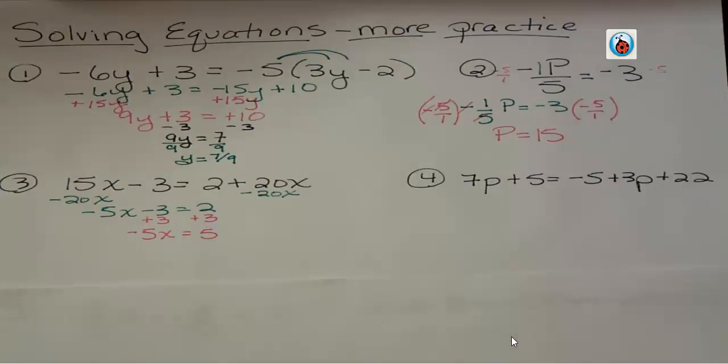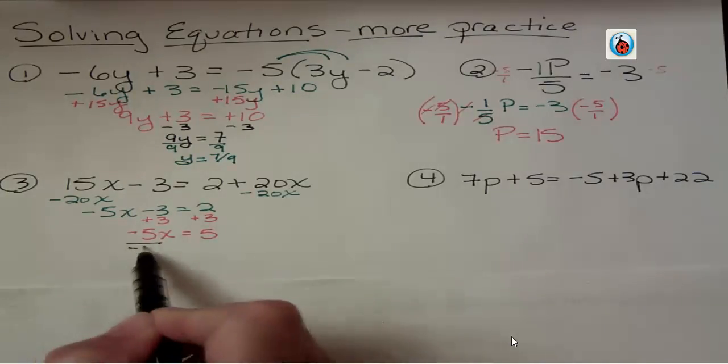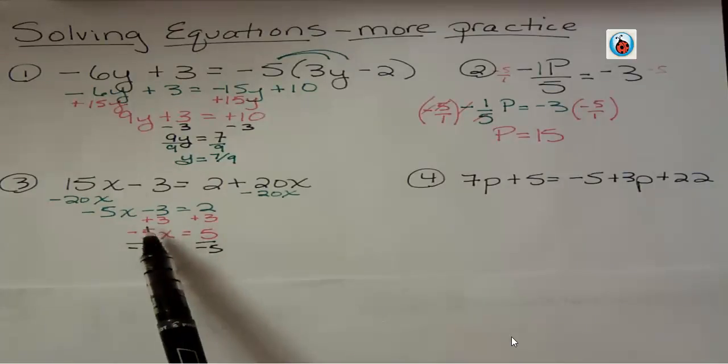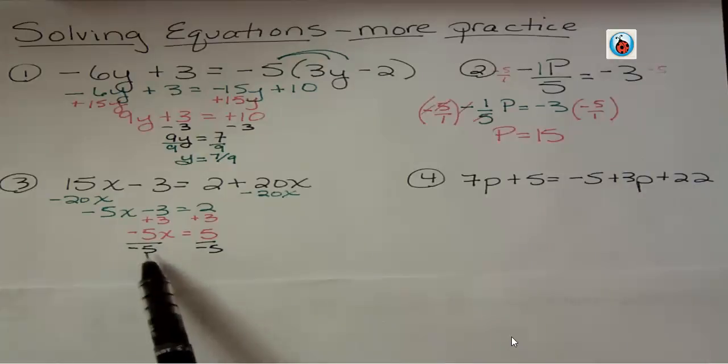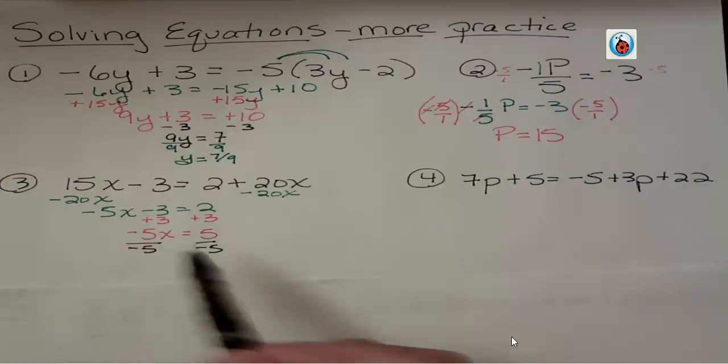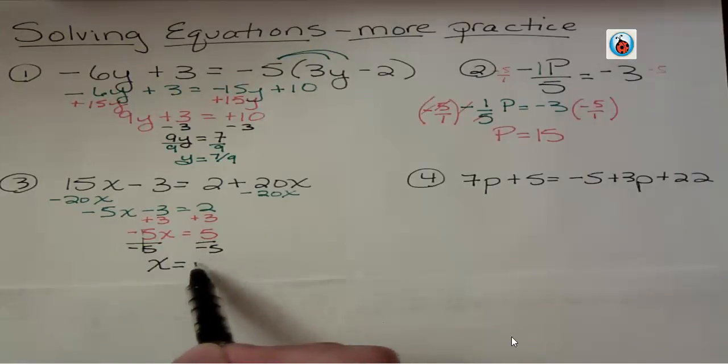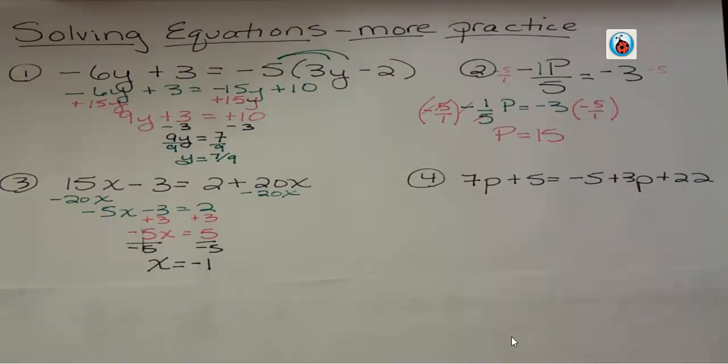I have negative 5x equals positive 5. What's the last step? Getting rid of that coefficient. Since it's a negative 5, I'm going to divide by negative 5. We use the addition property of equality with the opposite sign. But when we do the multiplication property of equality, we divide by or multiply by the number that we see. The two negatives cancel each other out to become positive 1. And 5 divided by negative 5 is negative 1. Notice how my answers are all stated: the final step is x or y or p equals some number. That's what we're doing when we solve.